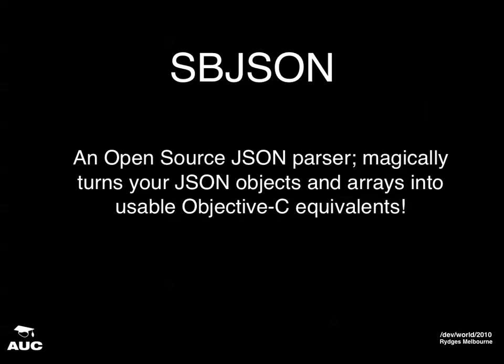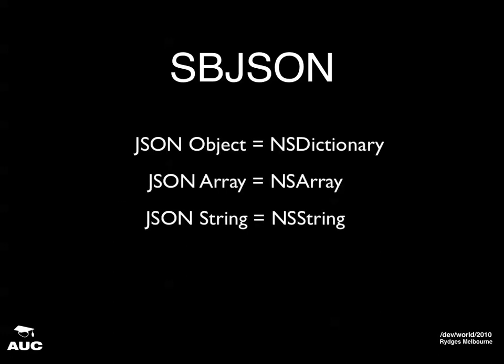I'll move on to SBJSON, which is our magical open-source JSON parser, which turns JSON into Objective-C equivalents for us. For example, a JSON object turns into an NSDictionary, a JSON array turns into an NSArray, a JSON string turns into an NSString, and there's NSNumber and boolean as well.